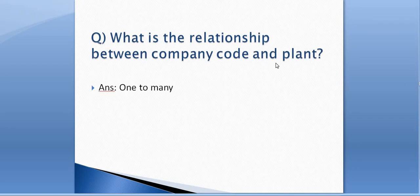What is the relation between company code and plant? This is a tricky question — be prepared to crack it in an interview. The relation is one-to-many, which means a company code can have multiple plants. But if you face the question 'what is the relation between a plant and company code,' that should also be one-to-many — meaning a plant cannot have multiple company codes, but a company code can have multiple plants.